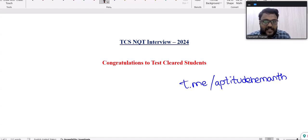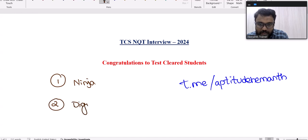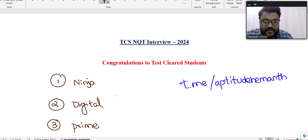Everybody received selection or test cleared mail for Ninja role, Digital, and Prime - there are three different roles. Digital is seven plus, Prime is nine plus, Ninja is 3.3 plus.